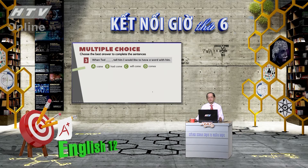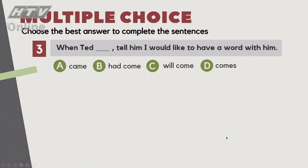Câu số 3: 'When Ted comes, tell him I would like to have a word with him.' Đáp án: A - Came, B - Had come, C - Will come, D - Comes. Cũng vậy, khi Ted tới thì nói anh ấy qua gặp tôi - chuyện Ted tới là chuyện trong tương lai, do đó đáp án là D - 'Comes.'